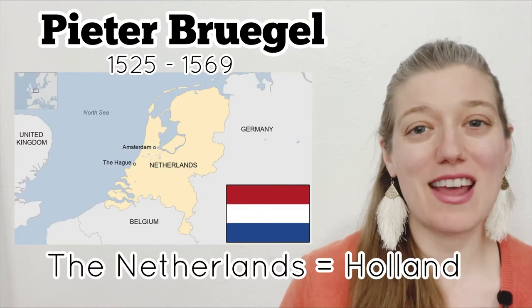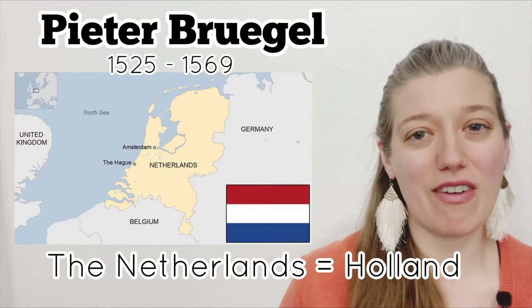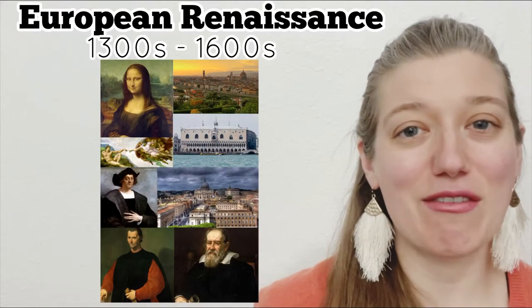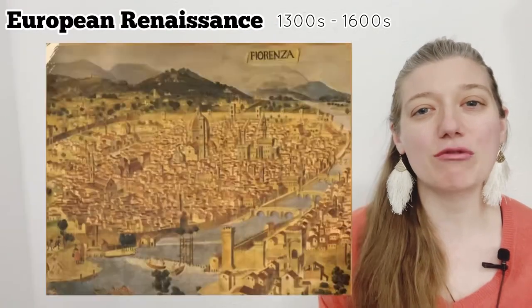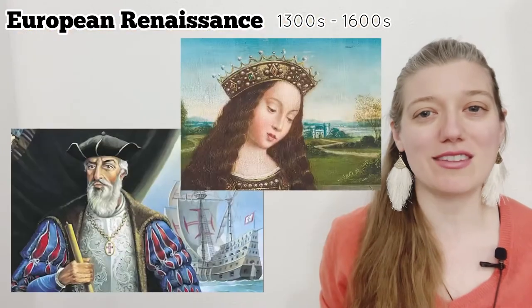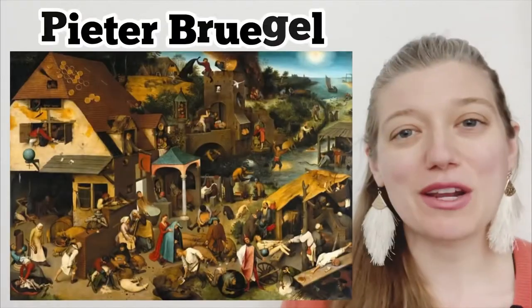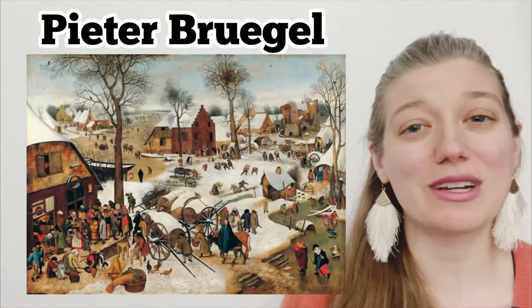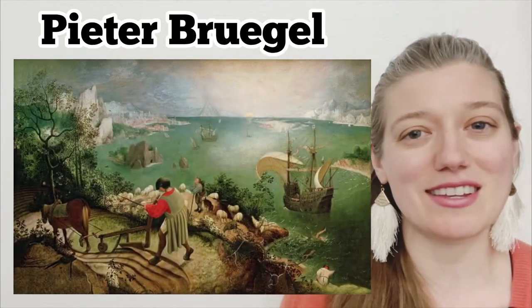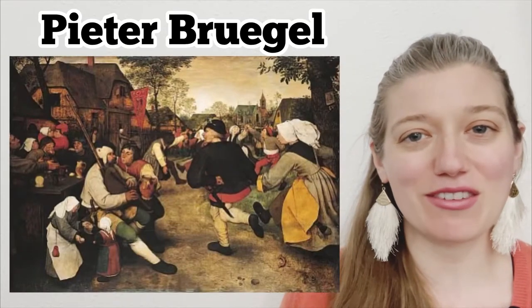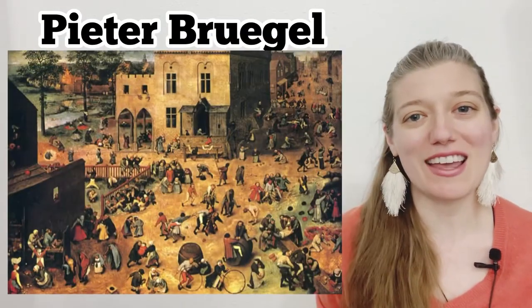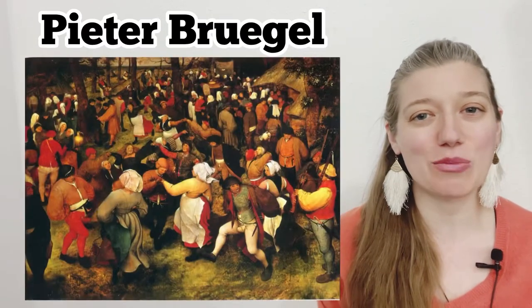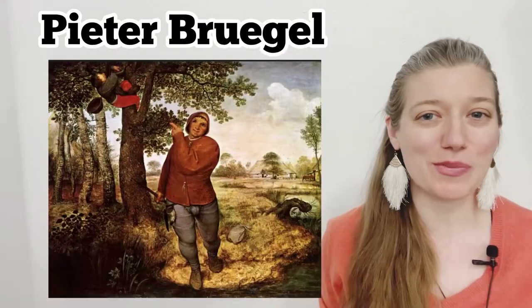He was born in the Netherlands in 1525 during the height of the European Renaissance — a time of rich cultural and artistic development throughout Europe. Peter Bruegel was known for his ability to realistically portray scenes from everyday life, and his paintings have a strong narrative quality, often telling a story or expressing a particular perspective.